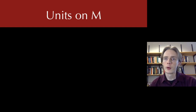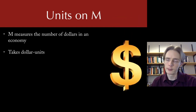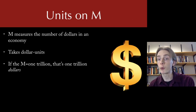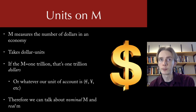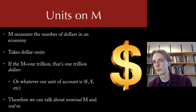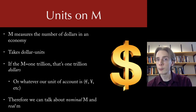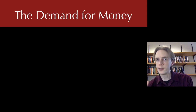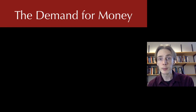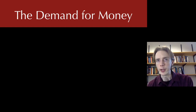Now let's talk about the units on M. If M measures the number of dollars in an economy, the units are dollars. When we say the money supply is $4 trillion, that's 4 trillion dollars — or euros in Europe, or yen in Japan. Because we have dollar units on the money supply, we can do the same thing we do with GDP: talk about real money supply and nominal money supply.